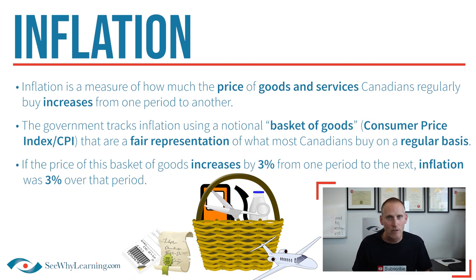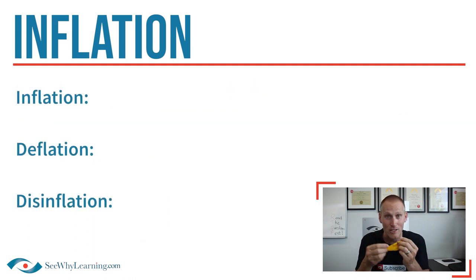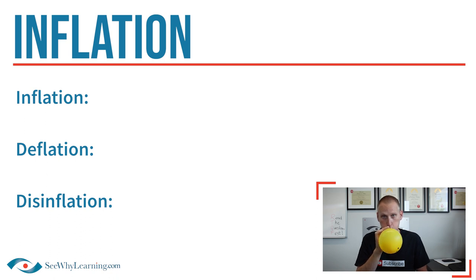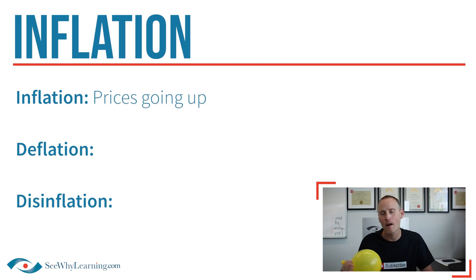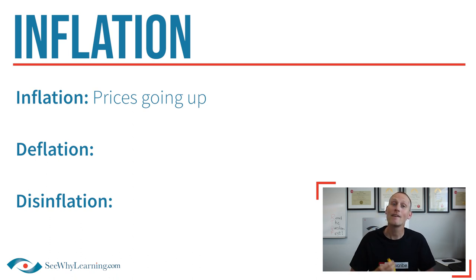That's the basic technical definition of inflation — but let me demonstrate. Let's say that this balloon is the Consumer Price Index. So let's introduce a little inflation into the economy. It's getting bigger, right? Prices are getting higher. That's obviously inflation.